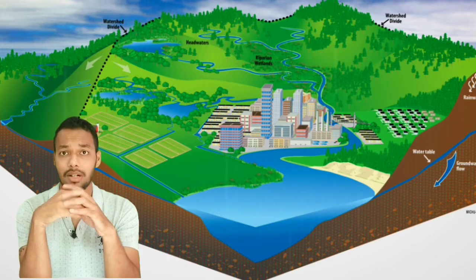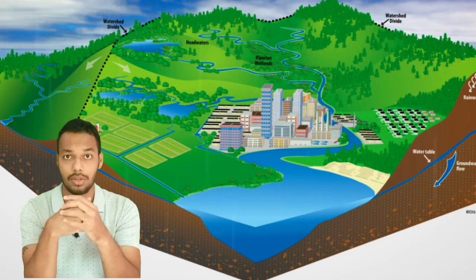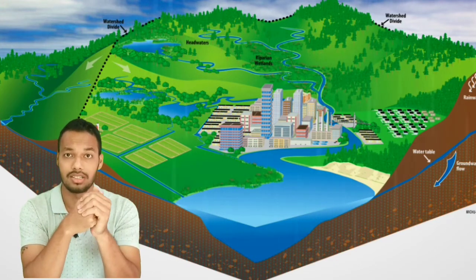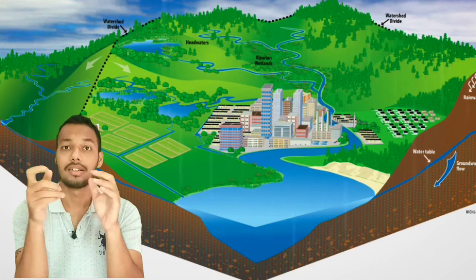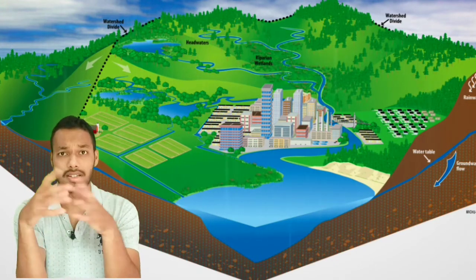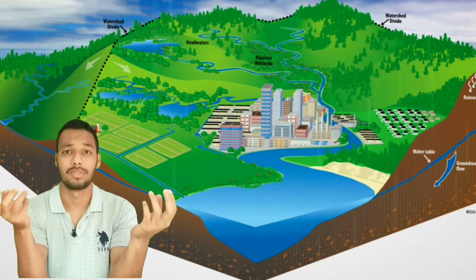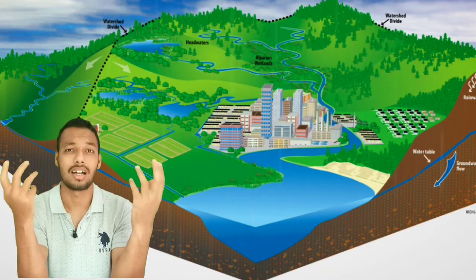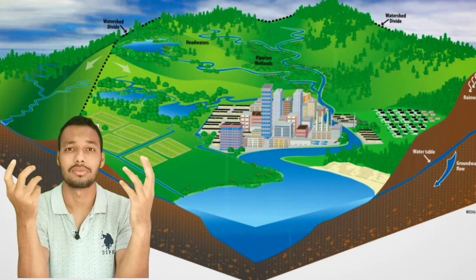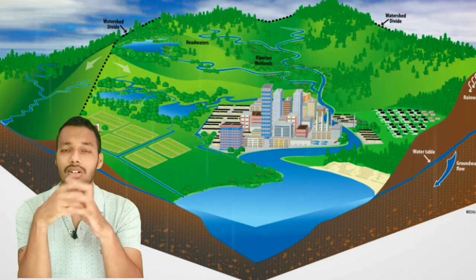These are the basic ideas about watershed and watershed development. There are also classifications like small watershed, medium watershed, then basin, and large basin like sub-catchment and others, which you can find in textbooks.